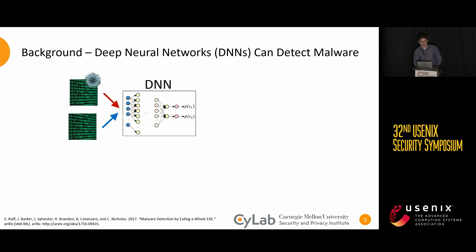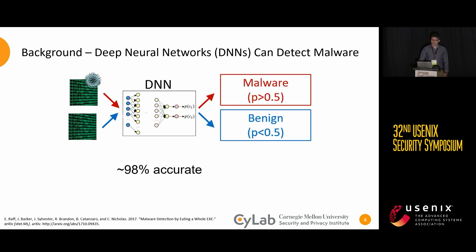As one of the many tools used to detect malware, deep neural nets, or DNNs, have been found to be promising and increasingly used. A DNN can look at the compiled bytes of a binary, such as an exe file or other executable, and output a prediction on whether it is benign or malicious. A DNN has been found to be around 98% accurate on unseen binaries.